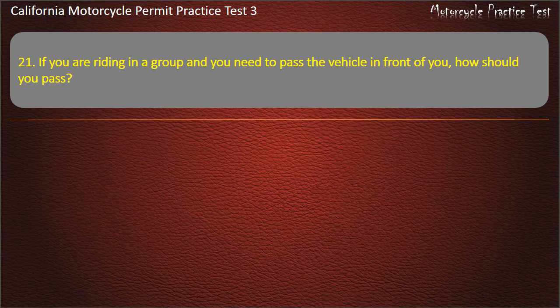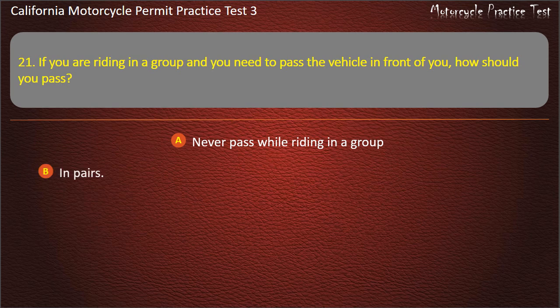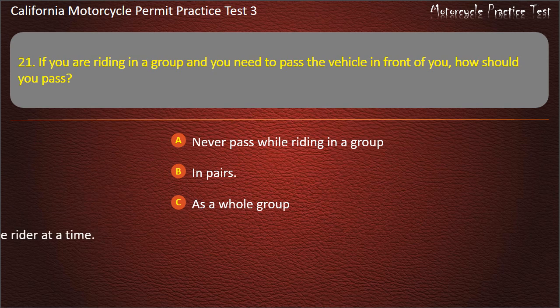Question 21. If you are riding in a group and you need to pass the vehicle in front of you, how should you pass? Never pass while riding in a group, in pairs, as a whole group, or one rider at a time. Answer: One rider at a time.